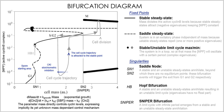The eukaryotic cell cycle is very complex and is one of the most studied topics, since its misregulation leads to cancers. It is possibly a good example of a mathematical model as it deals with simple calculus but gives valid results. Two research groups have produced several models of the cell cycle simulating several organisms. They have recently produced a generic eukaryotic cell cycle model that can represent a particular eukaryote depending on the values of the parameters, demonstrating that the idiosyncrasies of the individual cell cycles are due to different protein concentrations and affinities, while the underlying mechanisms are conserved. By means of a system of ordinary differential equations these models show the change in time of the protein inside a single typical cell. This type of model is called a deterministic process, whereas a model describing a statistical distribution of protein concentrations in a population of cells is called a stochastic process.